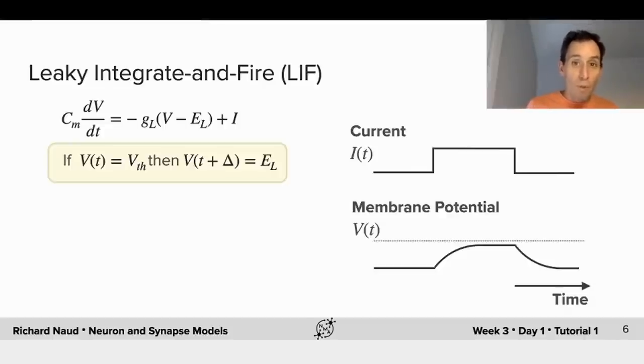And we consider a current that is weak enough such that we will not reach the action potential threshold. Then, the membrane potential will look like this. It remains to the equilibrium potential when current is zero.